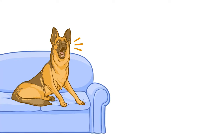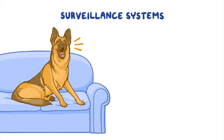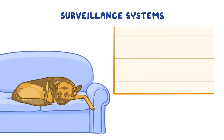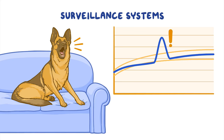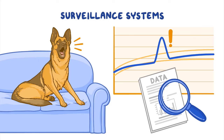Like a dog that barks in the night, surveillance systems alert public health experts when something unusual might be going on in a community. Sometimes a dog barks because someone is outside the door. Sometimes a dog barks at the wind or nothing at all — the only way to find out is to investigate. Similarly, when a surveillance system detects an increase in cases, public health experts must check the data to take a closer look. It might indicate a real outbreak is occurring, or it could be a false alarm.